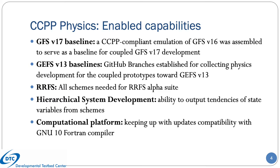In addition to new and updated schemes, several new capabilities were enabled. To create a baseline for the development of the Global Forecast System, a CCPP-compliant emulation of GFS version 16 was assembled. Branches were created for various GEFS prototypes, and all schemes needed for the RRFS suite were added. The ability to output tendencies of state variables from various schemes was added, and changes were made to enable compatibility with the GNU 10 FORTRAN compiler.